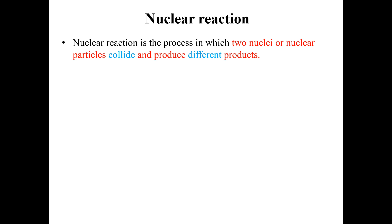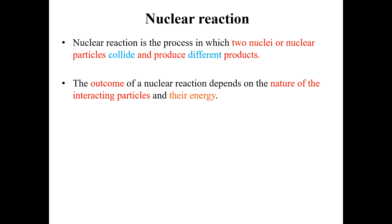The different products are the outcome of a nuclear reaction. Whenever a nuclear reaction occurs, the outcome depends upon the nature of the interacting particles and their energy. The output of any nuclear reaction depends upon these two main things: the nature of the interacting particles and their energy.